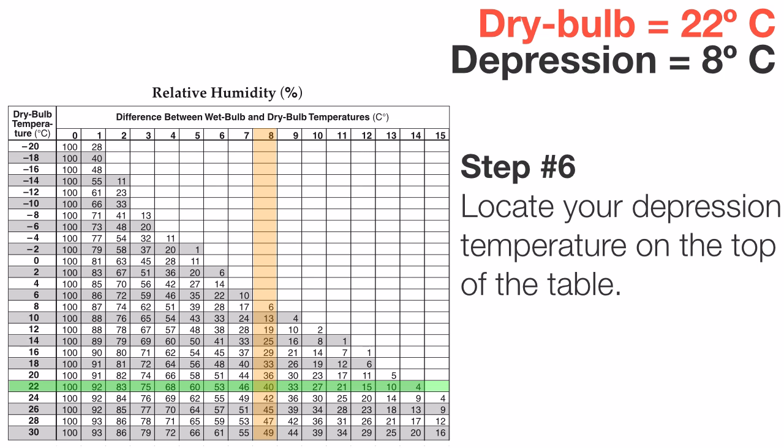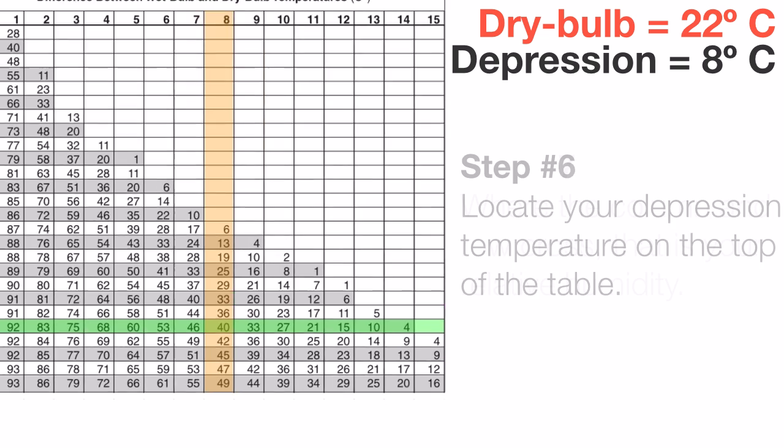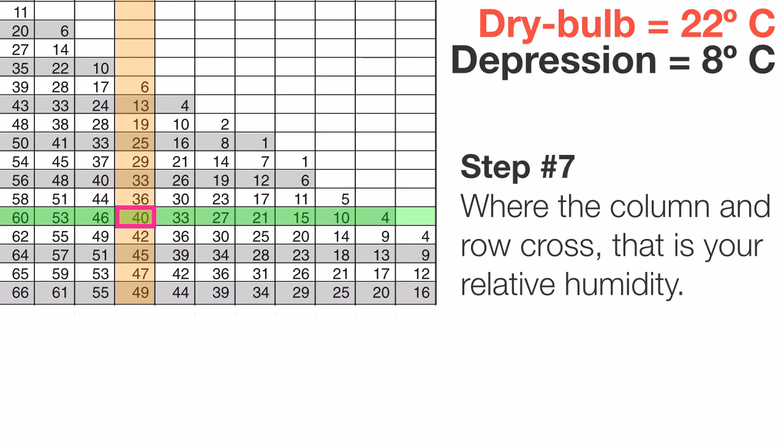Now notice how my green column, my green row and my orange column intersect. Where they intersect, that would be your relative humidity, which in this case is 40%. It's as simple as that.